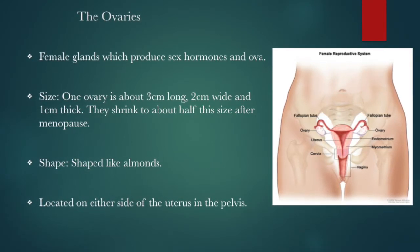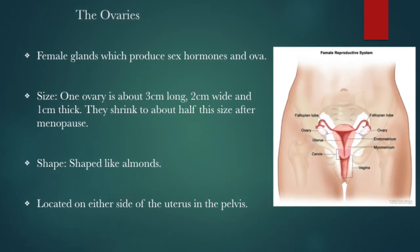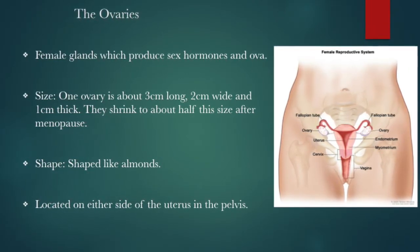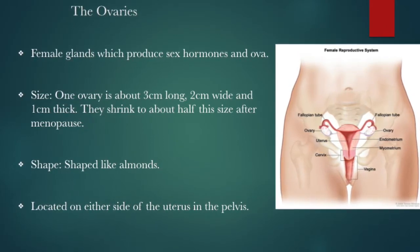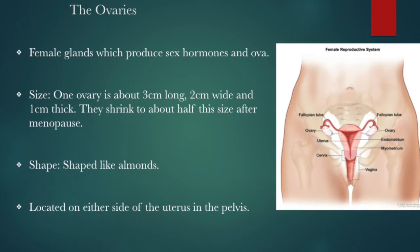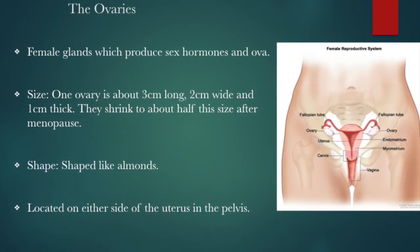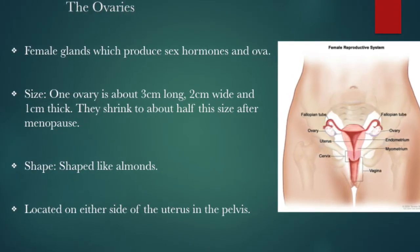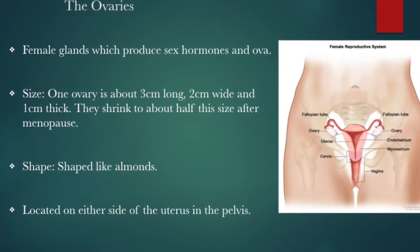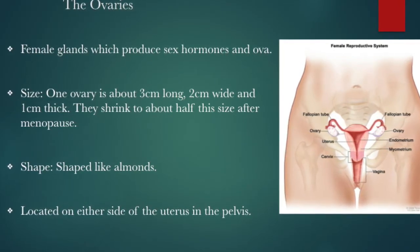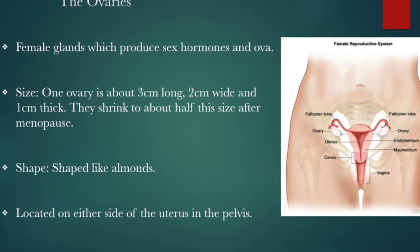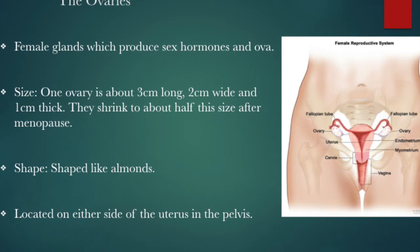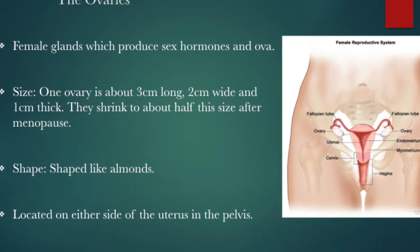The ovaries are the two almond-shaped glands located on either side of the uterus and the pelvis. Their normal size can range from about 3 to 5 centimeters in length by 2 centimeters wide by about 1 centimeter thick. Once a woman goes through menopause, they will shrink down to about half their normal size. The ovaries are responsible for the production of the ova or egg for reproduction, as well as the hormones estrogen and progesterone.